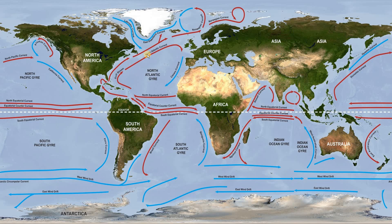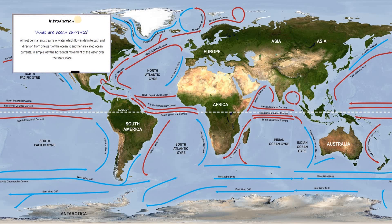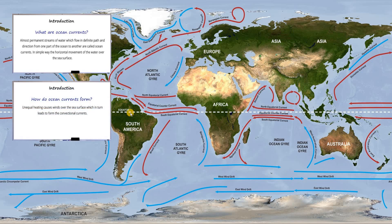We learned that ocean currents are permanent streams of water which flow from one part of the ocean to another in a definite path and direction. We also learned how they form — because of unequal heating over the sea surface which causes winds, which in turn form convection currents. One important point: friction between the ocean and the atmosphere is essential. Without friction, wind alone cannot form all the waves and currents over the ocean surface.